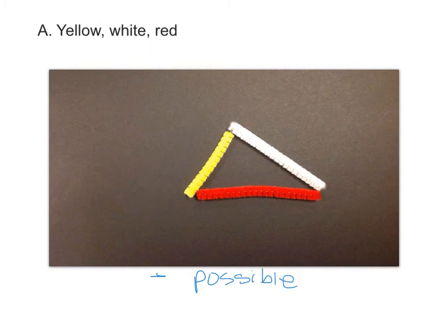And then we're going to move on to letter C. So be sure you have made your triangle and written the word possible before you move on.